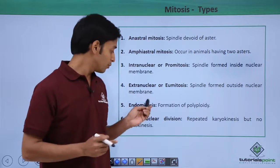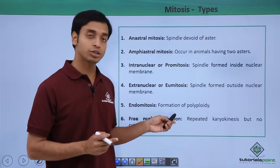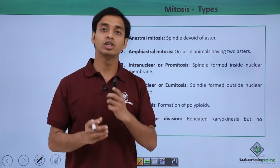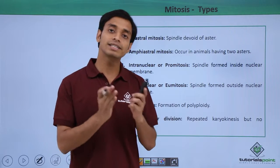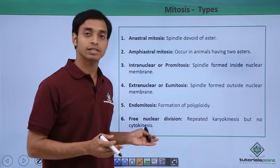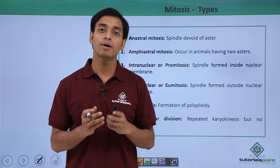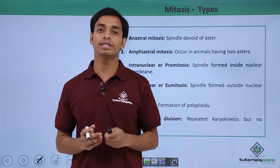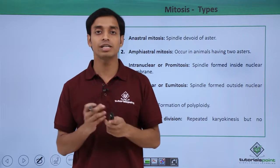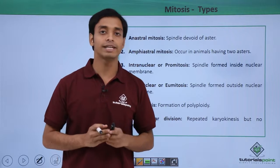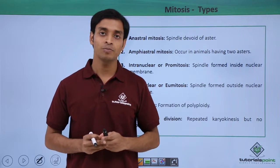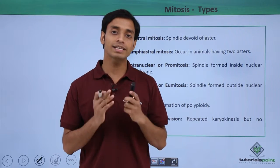The sixth type is free nuclear division. Here repeated karyokinesis, that is nuclear division, occurs but is not followed by cytokinesis, so it results in the formation of multi-nucleated cells. This type of cell is also known as the coenocytic type of mitosis.